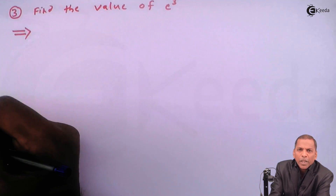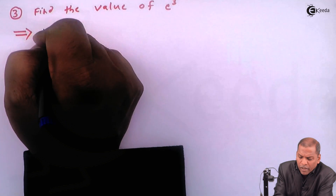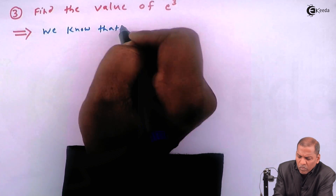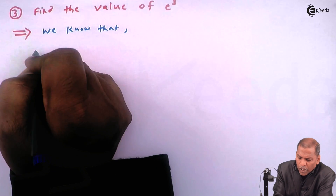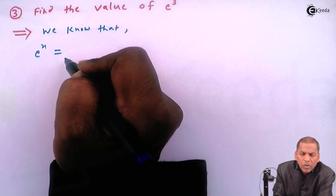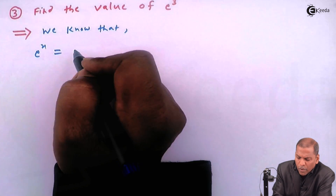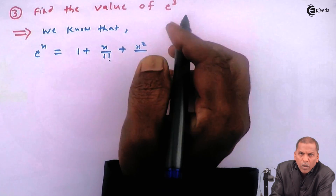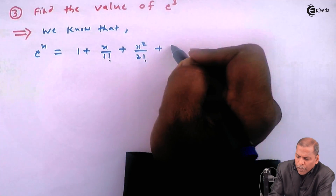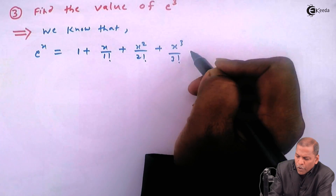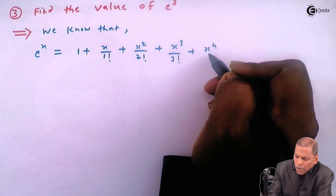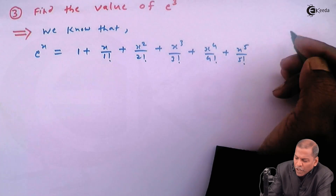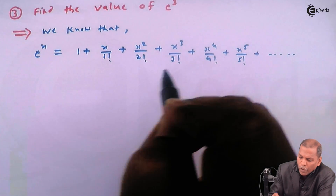As we know, e raised to x — that is, the exponential series — is equal to 1 plus x upon 1 factorial, plus x squared upon 2 factorial, plus x cubed upon 3 factorial, plus x raised to 4 upon 4 factorial, plus x raised to 5 upon 5 factorial, and so on.